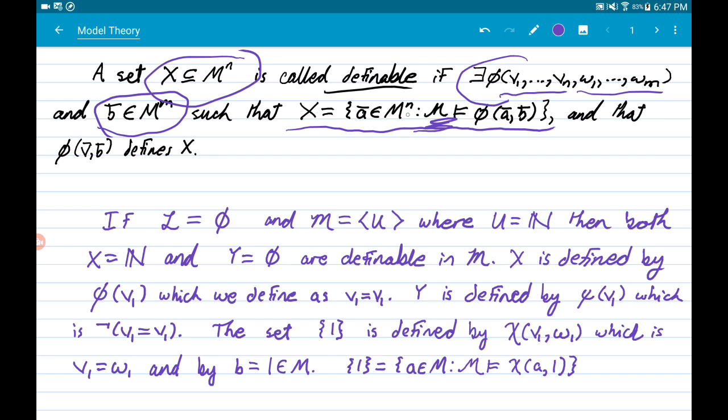So basically, it's the set of things for which phi is true, in some sense. That's the intuitive notion, or the intuitive shorthand here, is that a set is definable if its elements are precisely the things that make some formula true. That's basically the intuition.